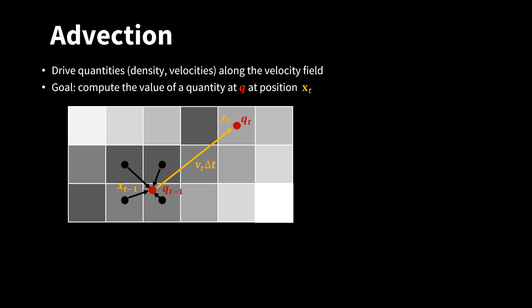In order to compute the value of Q at the current time step t, we need to know what the value was at the previous time step t minus 1. For this, we trace Q backwards in time. We can compute the position of Q at the previous time step x t minus 1 by subtracting the velocity times the time step size from the current position. Here, we assume that Q traveled in a straight line, which is an approximation.